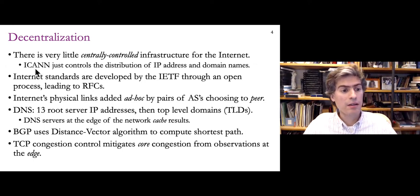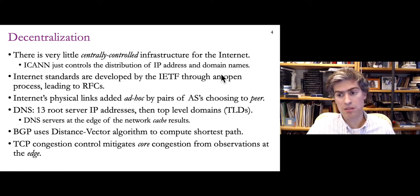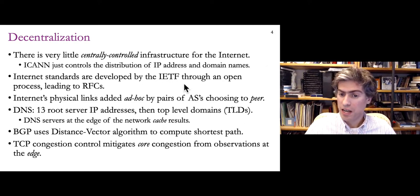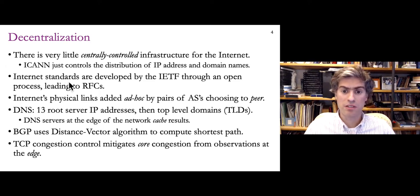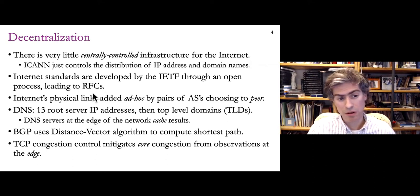There's ICANN — the Internet Corporation for Assigned Numbers and Names — which controls the distribution of IP addresses and domain names, making sure those are given exclusively to individual organizations. There's also the IETF, the Internet Engineering Task Force, which helps develop internet standards. The protocols we use on the internet have to be agreed upon, so the IETF manages that process with open community engagement, leading to RFCs — Requests for Comments — which are the documents that define the protocols.